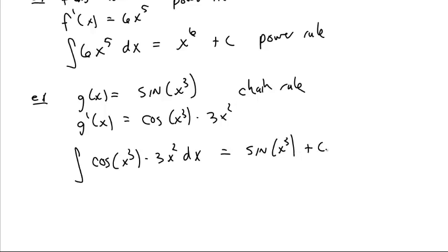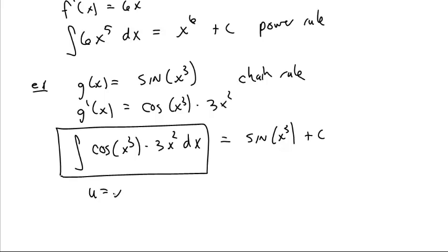And to undo the chain rule, we use u-substitution. If you were just given this, you would probably say set u equal to x cubed, du equals 3x squared dx, this becomes the du, this becomes cosine of u, and so on.